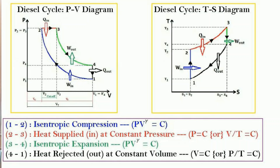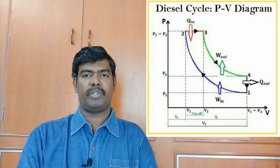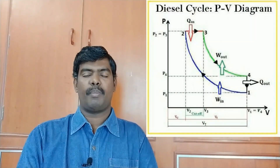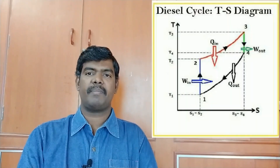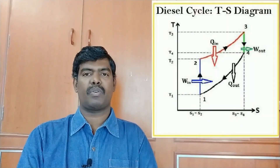In the PV diagram, the x-coordinate is volume and the y-coordinate is pressure. In the TS diagram, the x-coordinate is entropy and the y-coordinate is temperature. The diagrams clearly explain processes 1 to 2, 2 to 3, 3 to 4, and 4 to 1 — showing where work is input or output and where heat is supplied or rejected. The four states 1, 2, 3, 4 correspond to volumes V1, V2, V3, V4 and pressures P1, P2, P3, P4.